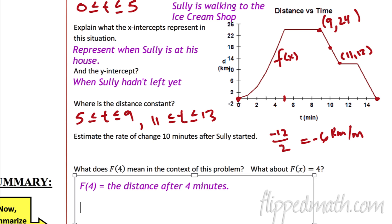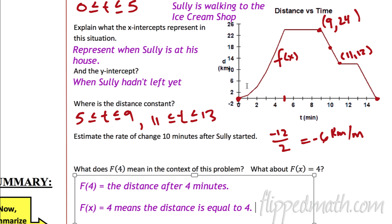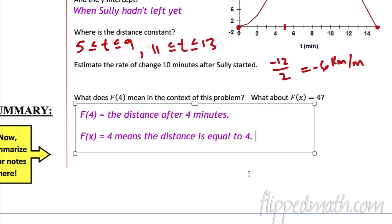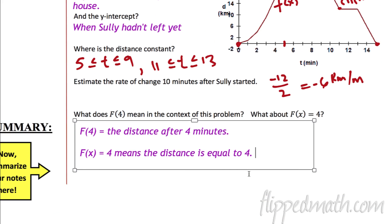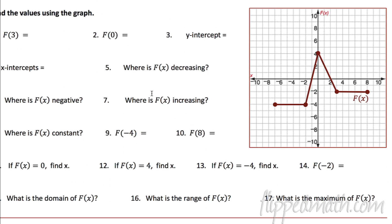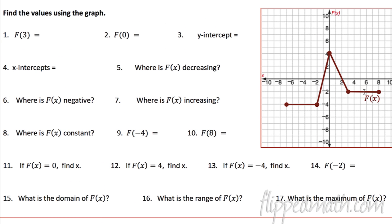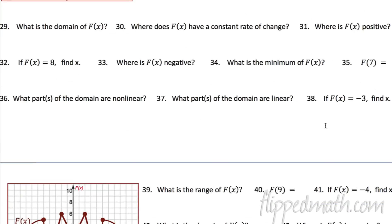What about f of x equals 4? That means his distance equals 4. If we had to solve for x, there are two places — like at t equals 2, and then over here at about 14. Your homework is just to get really good at finding all these different areas — domain, range — and writing them down. That's what it is.